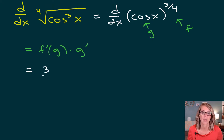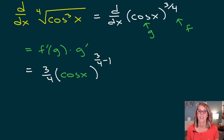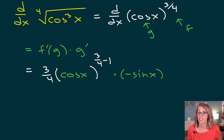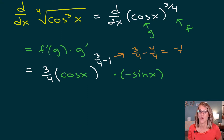As I take that derivative, the outer function is the power 3 fourths that came from that radical. I'm going to bring the 3 fourths out in front, then apply the power rule: 3 fourths minus 1. On the inside, I leave the inner function fixed — that's cosine of x. On the outside, I multiply by the derivative of the inner function, which is negative sine of x. For 3 fourths minus 1, giving ourselves a common denominator: 3 fourths minus 4 fourths. Three minus four is negative 1, so I get negative 1 fourth.